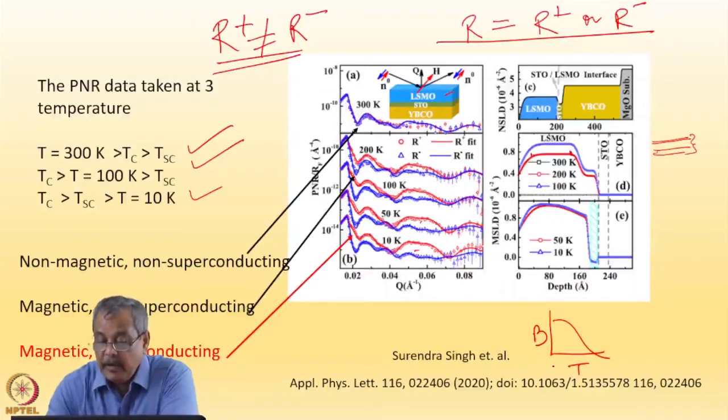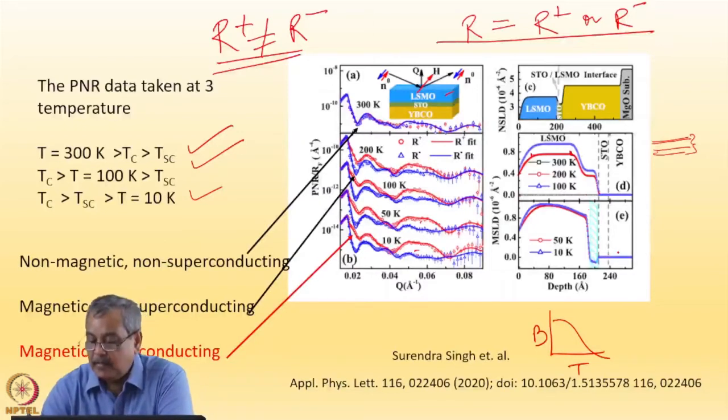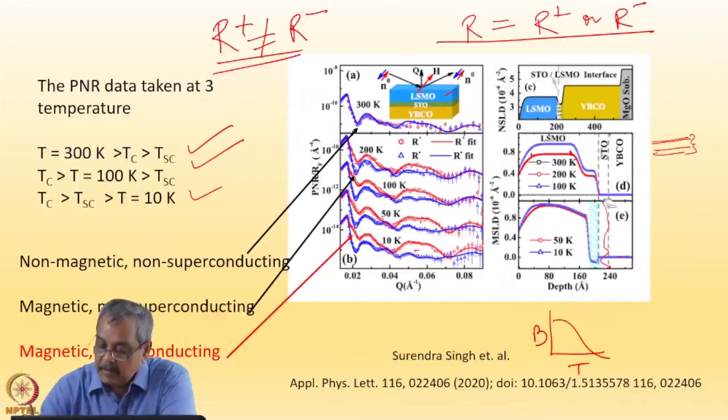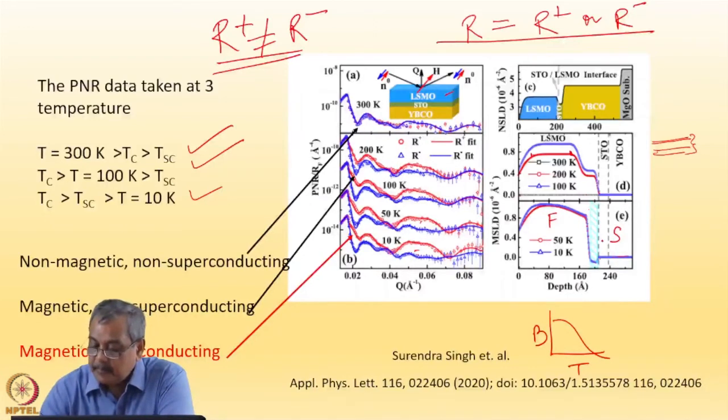Now, we are going to 10 degrees Kelvin. At 10 degrees Kelvin, you see the profile, the major profile remains nearly the same. This part is the insulator part. And then we go to the YBCO part. YBCO has zero magnetic moment density. But please see, this is the insulator. So this is the superconductor, this is the ferromagnet, and this is the insulator. Watch this part.